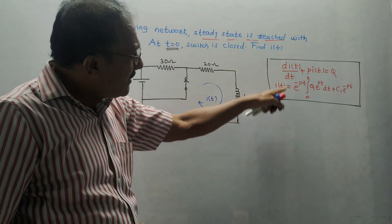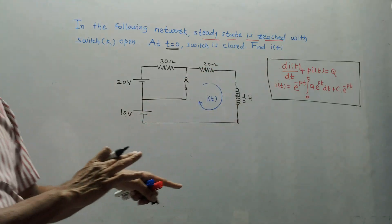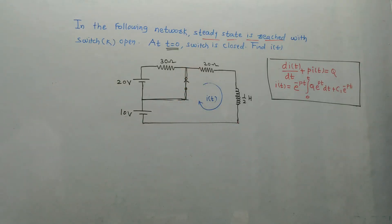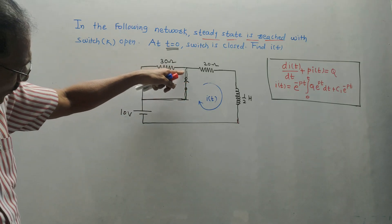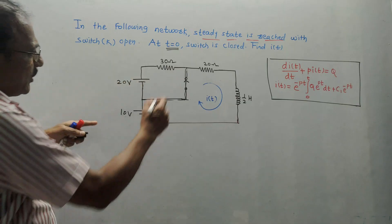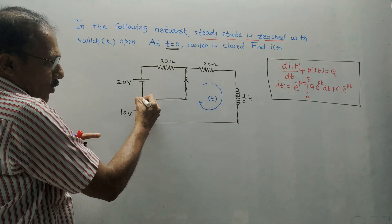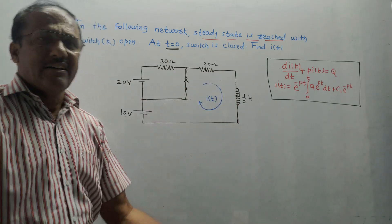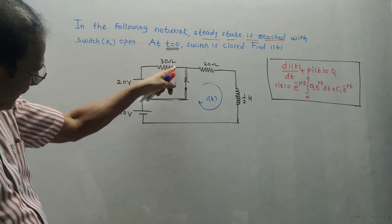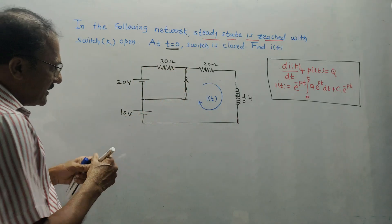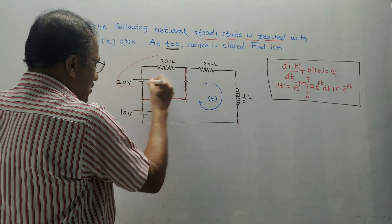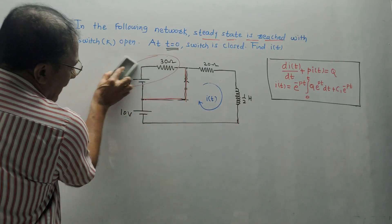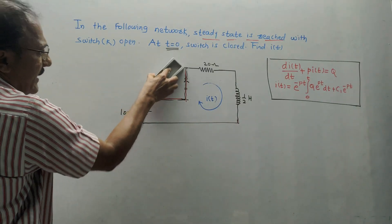We have to calculate current I of t. Recall the basic concept: since the switch is closed, there is a short circuit line. The 20 volt source and 30 ohm resistor are in parallel with this short circuit line. If there is a short circuit in parallel with any component, that component gets vanished — this is a redundant branch. So this branch gets removed and should not be considered for the calculation.